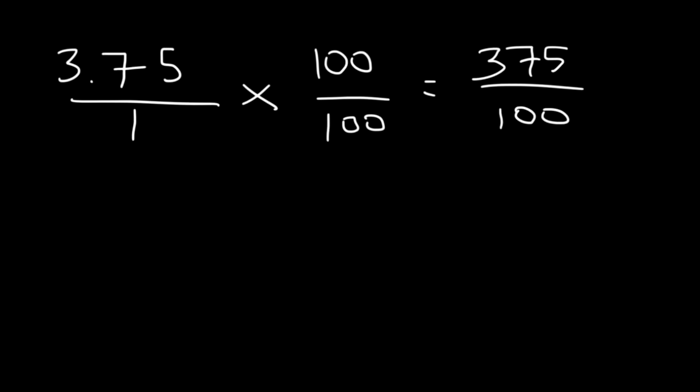Now, both numbers are divisible by 5. Anytime a number ends in 5 or 0, it's divisible by 5. So, let's divide each by 5. 375 divided by 5 is 75. And 100 divided by 5 is 20.